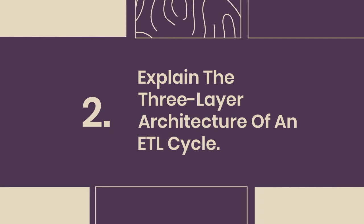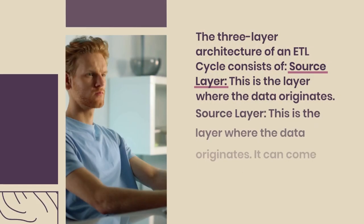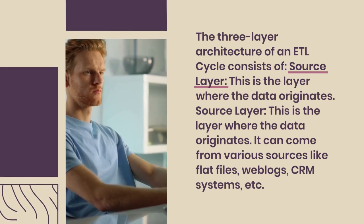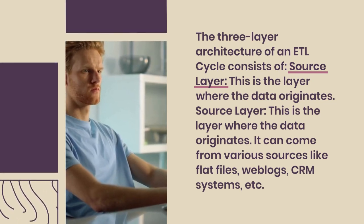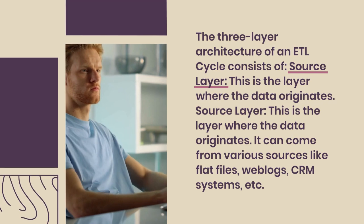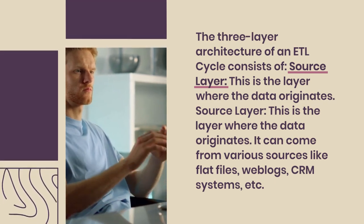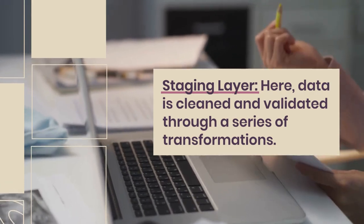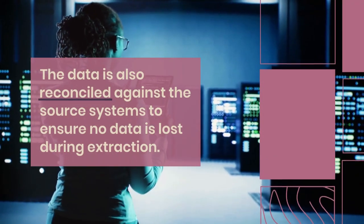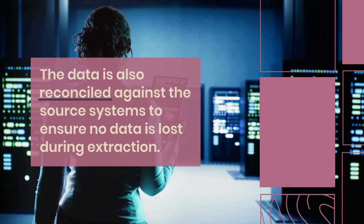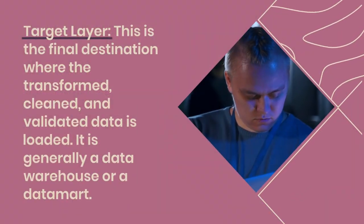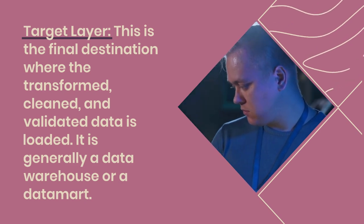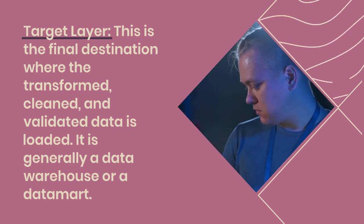Question 2: Explain the three-layer architecture of an ETL cycle. The three-layer architecture consists of: Source layer — where data originates from various sources like flat files, weblogs, and CRM systems. Staging layer — where data is cleaned and validated through transformations and reconciled against source systems to ensure no data is lost. Target layer — the final destination where transformed, cleaned, and validated data is loaded, generally a data warehouse or data mart.